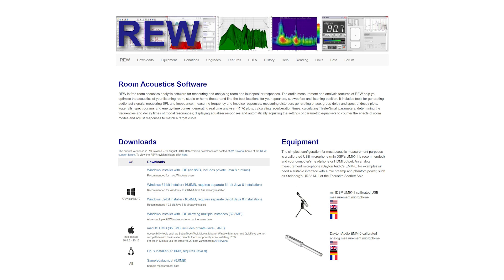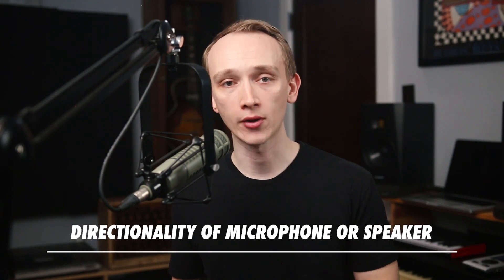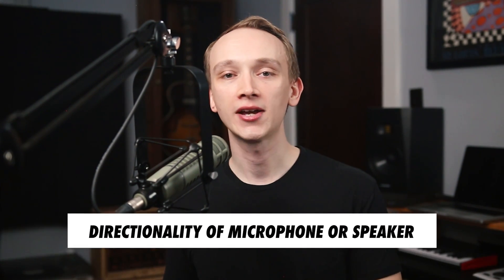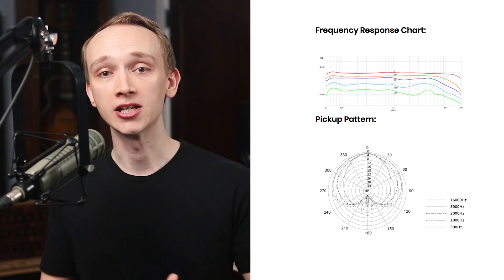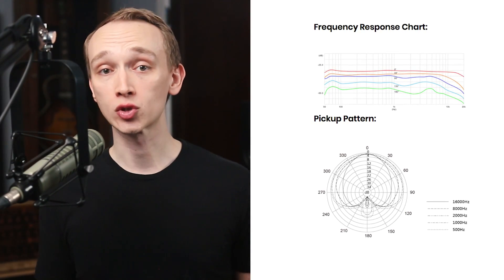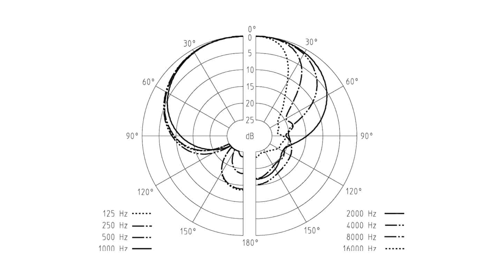You could measure the frequency response of your own devices using an audio interface and a free software called RoomEQWizard. There are a few factors that might affect the results of a frequency response measurement, especially a measurement that takes place in an acoustic environment. The first factor is the directionality of the microphone or speaker being measured. The specified frequency response of a microphone or speaker is generally describing the on-axis response. This means that the frequency response may vary if the microphone or speaker is pointed in a different direction relative to the source or the listener. Microphones tend to sound darker when recording sound sources that are off-axis.